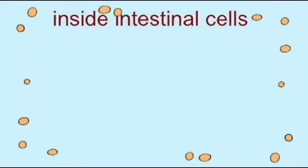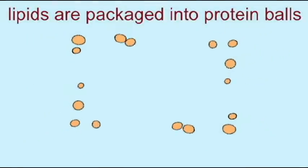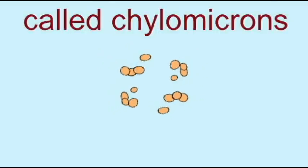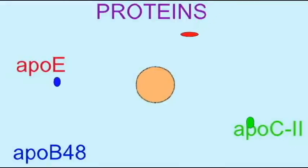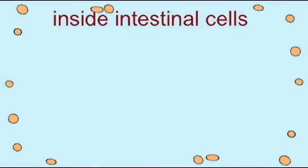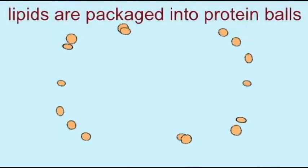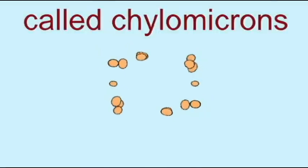When we digest the lipids of our diet, the intestinal cells which absorb them package them into balls known as chylomicrons. Lipids won't travel through the blood, so they need to be carried by these protein balls. Three proteins are used: ApoB48, ApoC2, and ApoE. These protein balls are then absorbed into a lacteal, and from there through the lymphatic system into the blood.